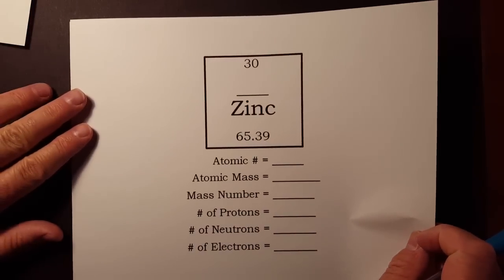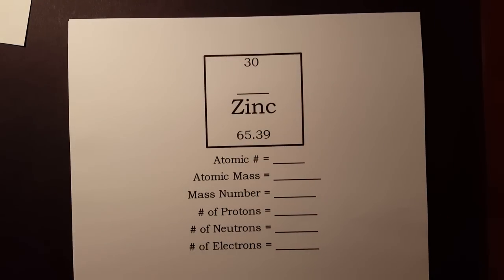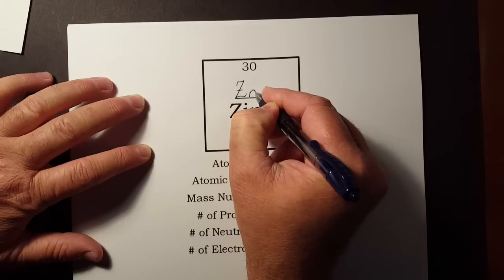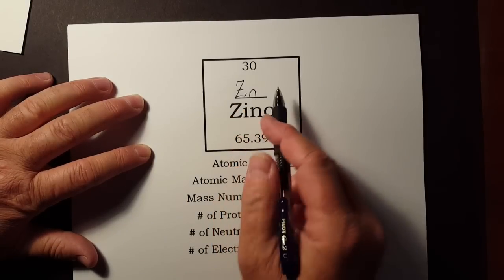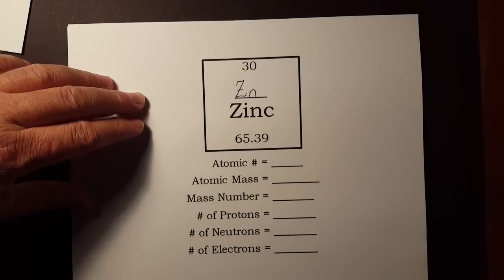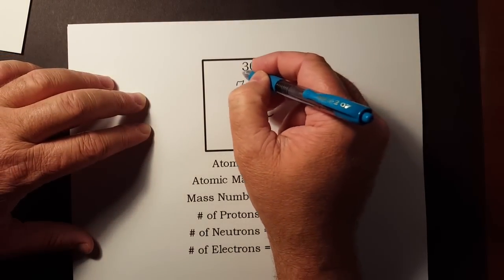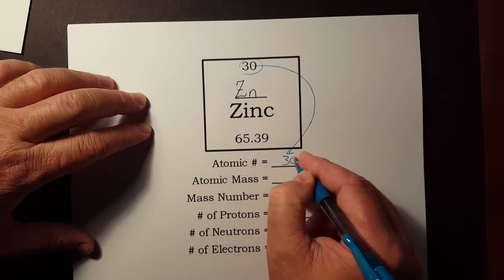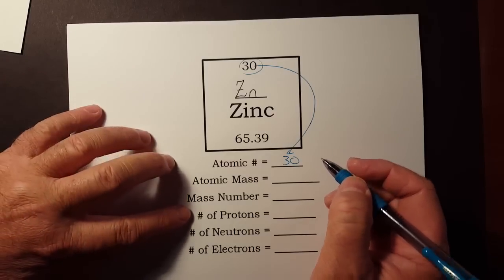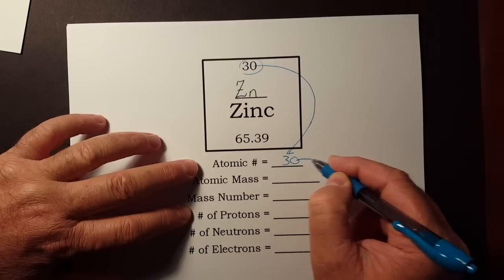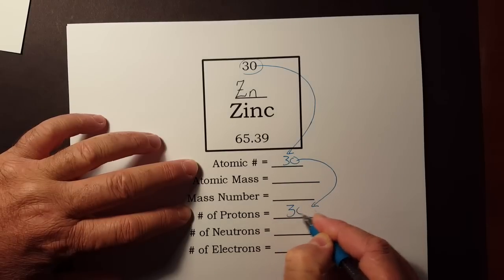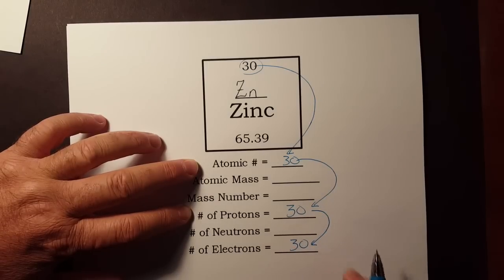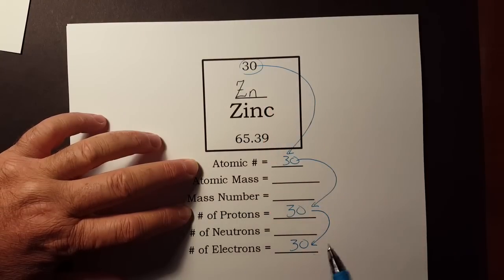Let's take a look at our next example. Number 30 on the periodic table, what we're missing is zinc, capital Z, lowercase n. Notice lowercase, not just a capital N made smaller. It makes a difference. We're going to start again. We take our atomic number straight from the top. Now we're going to skip around here and make our life a little bit easier. Since we already know the atomic number, we already know that that's the number of protons. And since it's a neutral atom, we already know that has to be the same as the number of electrons. So right away, that number gives us three things to fill in.